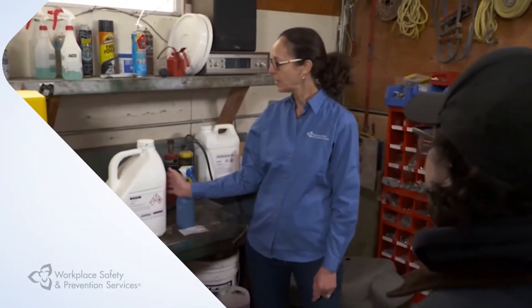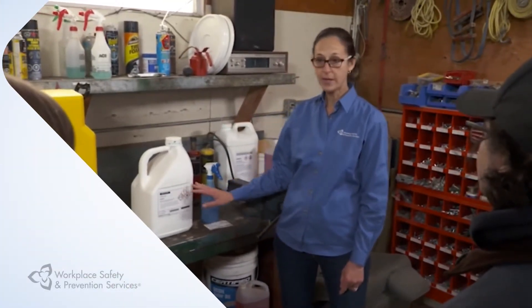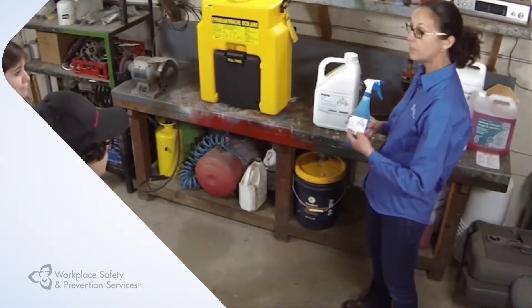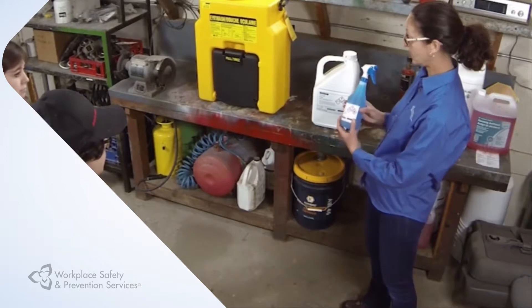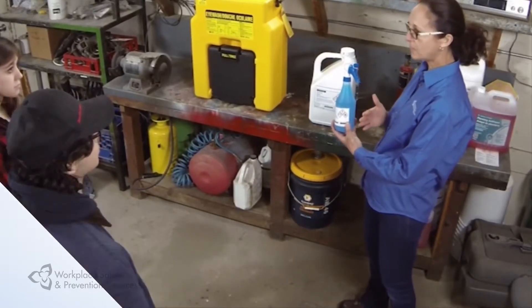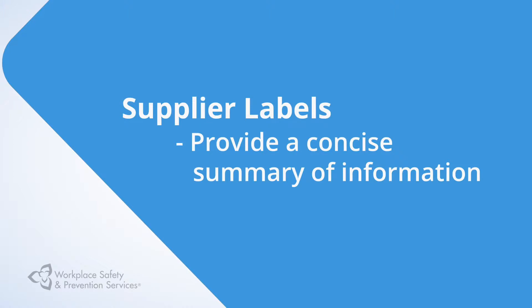Product warning labels alert workers that a product is potentially hazardous. The label warns of the major hazards of the product and the basic precautions that should be taken. There are three main label types. Supplier labels are placed on the containers by the supplier or manufacturer of the hazardous material and provide a concise summary of information pertaining to that product.